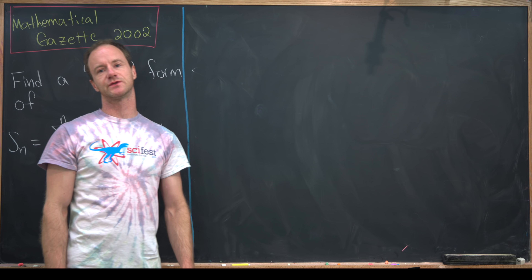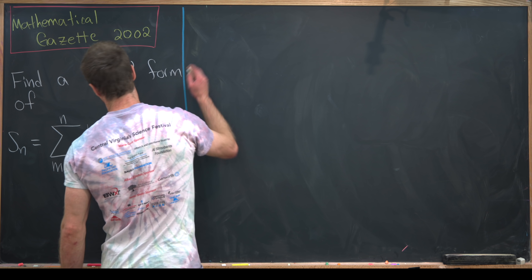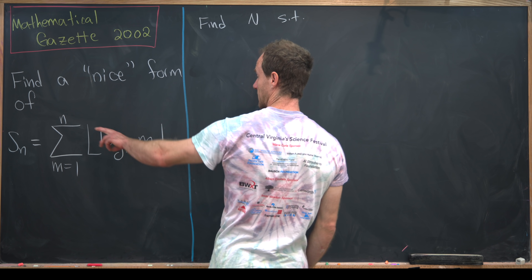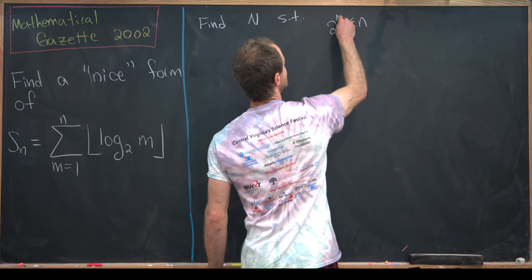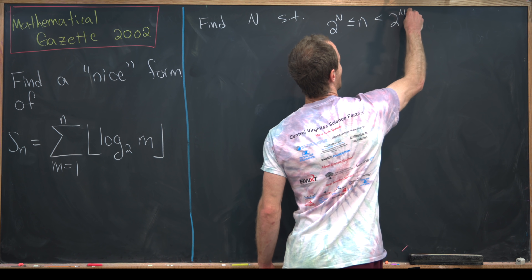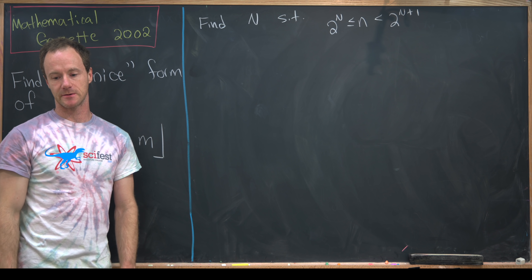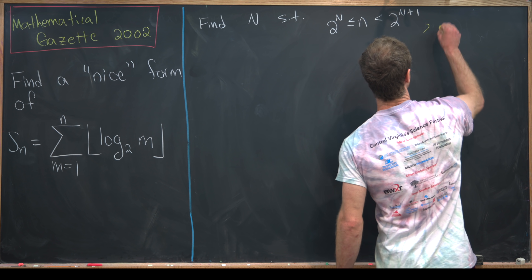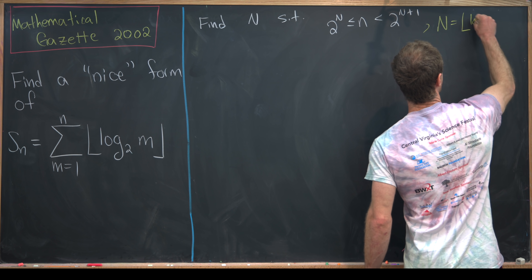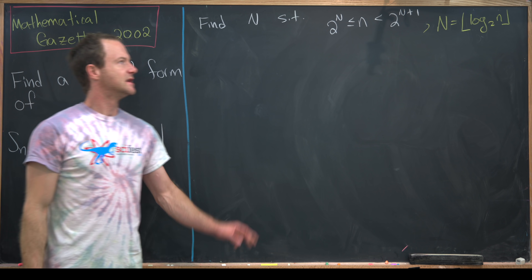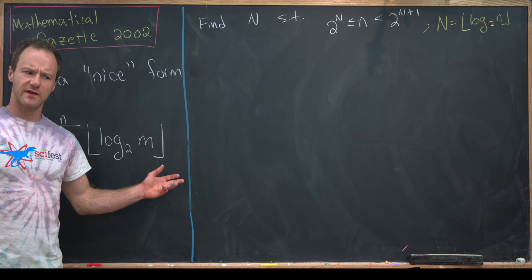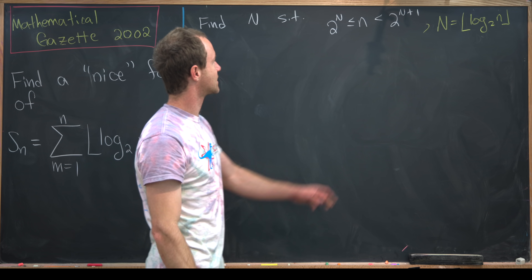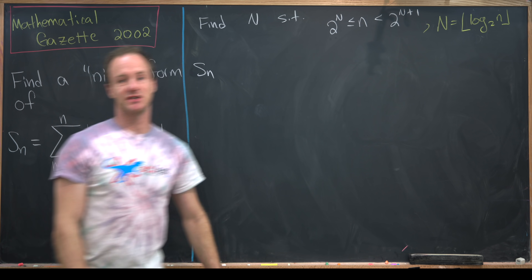Now we're ready to look at the meat of this problem. The first thing I want to do is find a number, capital N, such that little n — the upper bound of our sum — lies between 2^N and 2^(N+1), not including that upper bound. Notice that means capital N is the floor of log base 2 of little n. We'll use this fact to split the sum into two pieces, splitting apart at the 2^N term.